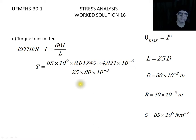The torque, rearranging that equation, is going to be based on the modulus and the angle of twist in terms of radians, the polar second moment of area, and 25 times the diameter.